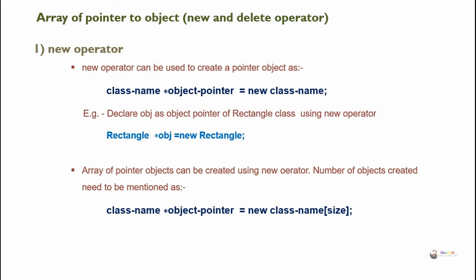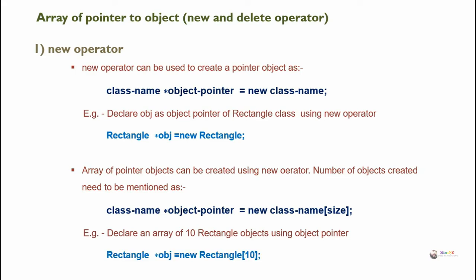The size within square brackets indicates the array size, that is the number of pointer objects to be created. For example, to declare an array of 10 rectangle objects using an object pointer: rectangle star obj equal new rectangle of 10, where 10 indicates the number of rectangle objects — the size of the array — and obj is the object pointer.